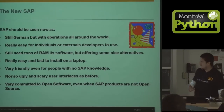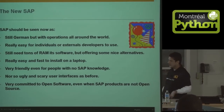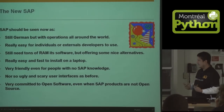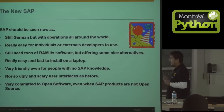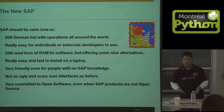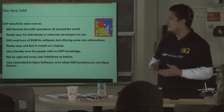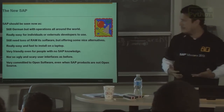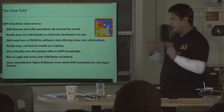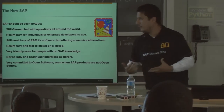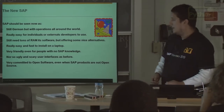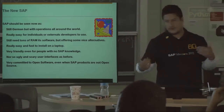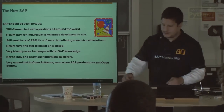But right now we have the new SAP, which is still German but it's all around the world. It's really easy for individuals or external developers to use it. It still needs a lot of RAM, but we provide really nice alternatives for that. It's really easy to install now, and very friendly even for people who haven't used any SAP software before. It's still kind of ugly, but we're working on that. And it's actually very committed to open source — SAP contributes a lot to Eclipse, because most of our new tools are based on Eclipse.